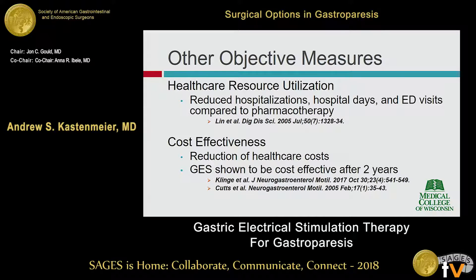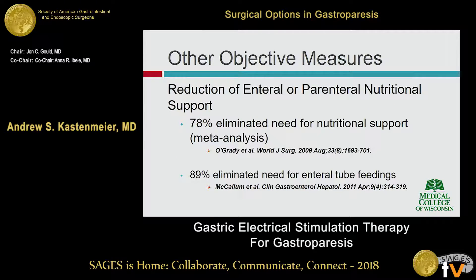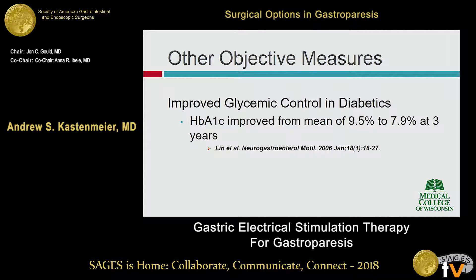To assess objective outcomes, people have measured healthcare resource utilization and found reduced hospitalizations, hospital days, and ED visits compared to pharmacotherapy, along with a reduction in healthcare costs. One study showed GES was cost-effective after a two-year period compared to pharmacotherapy. There's also substantial data showing reduced need for enteral and parenteral nutritional support — 78% were able to eliminate nutritional support needs on meta-analysis, and one later study showed 90% eliminated the need for enteral feeding. Additionally, improved glycemic control was seen with hemoglobin A1C levels improving even after three years.